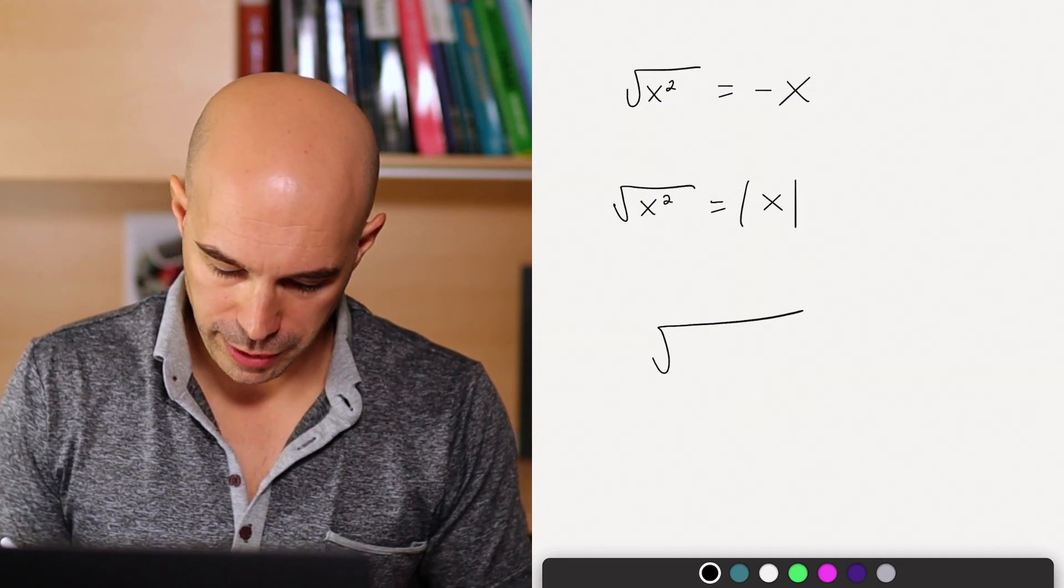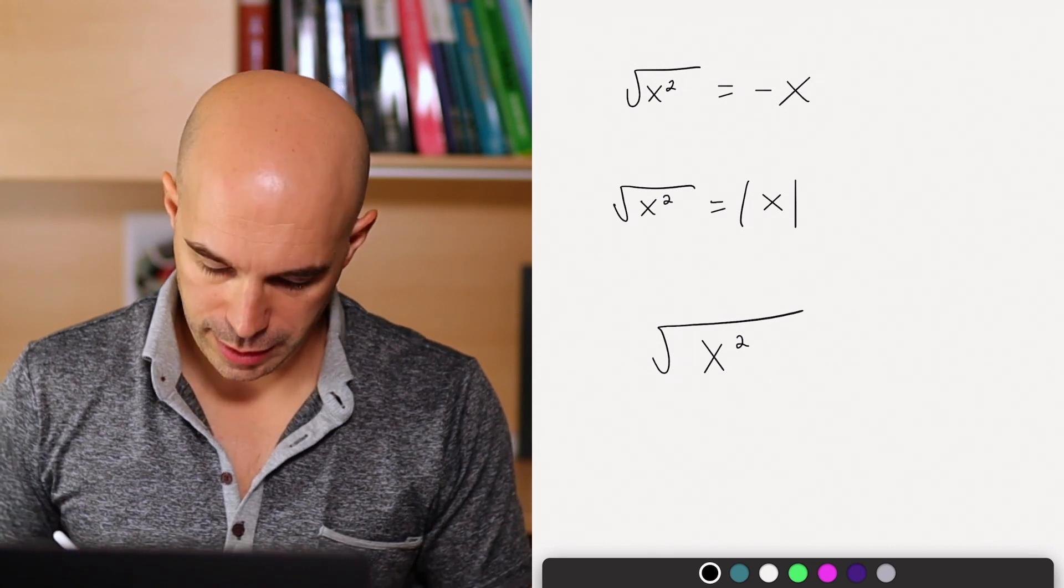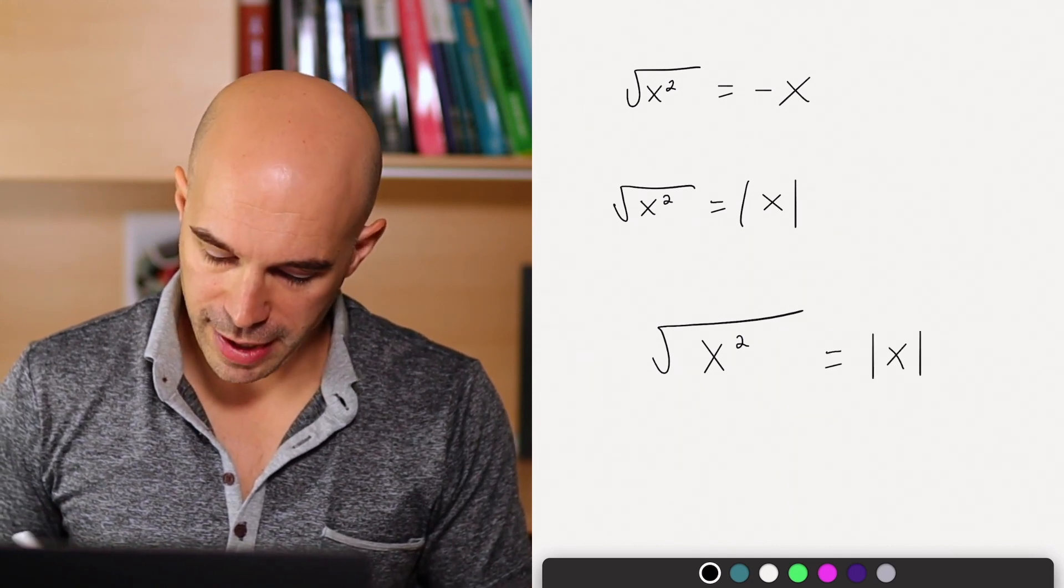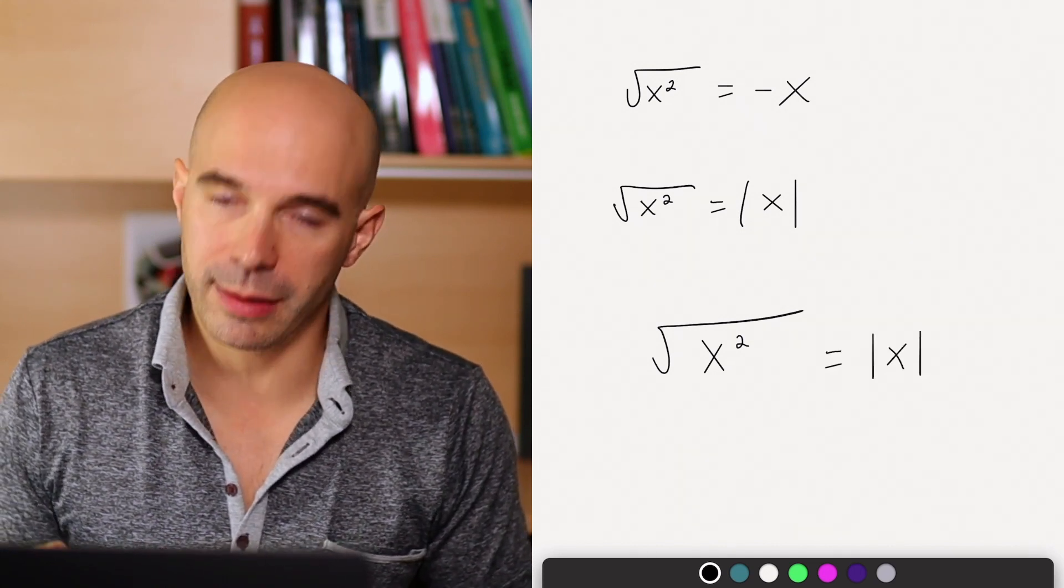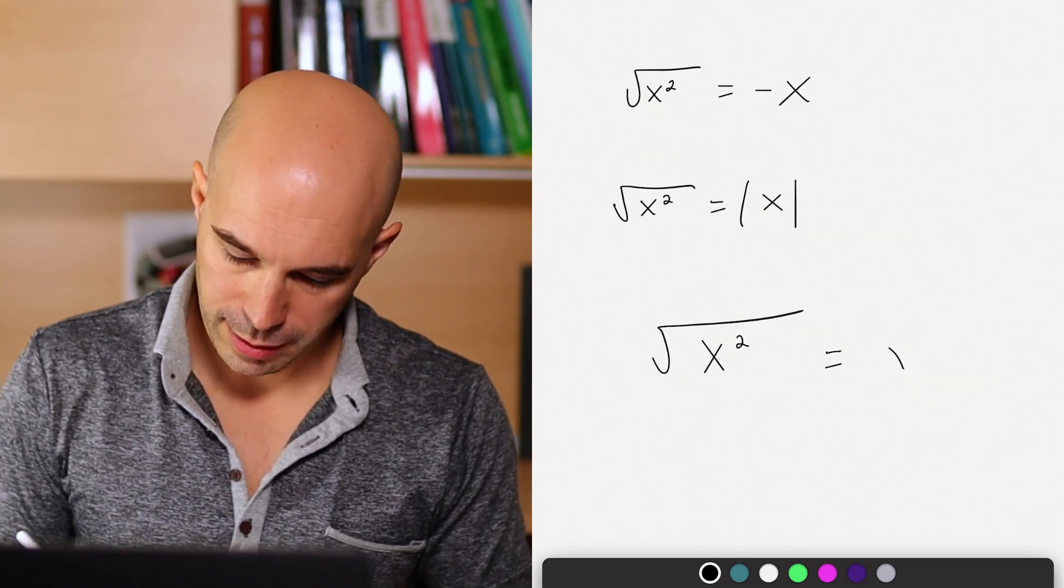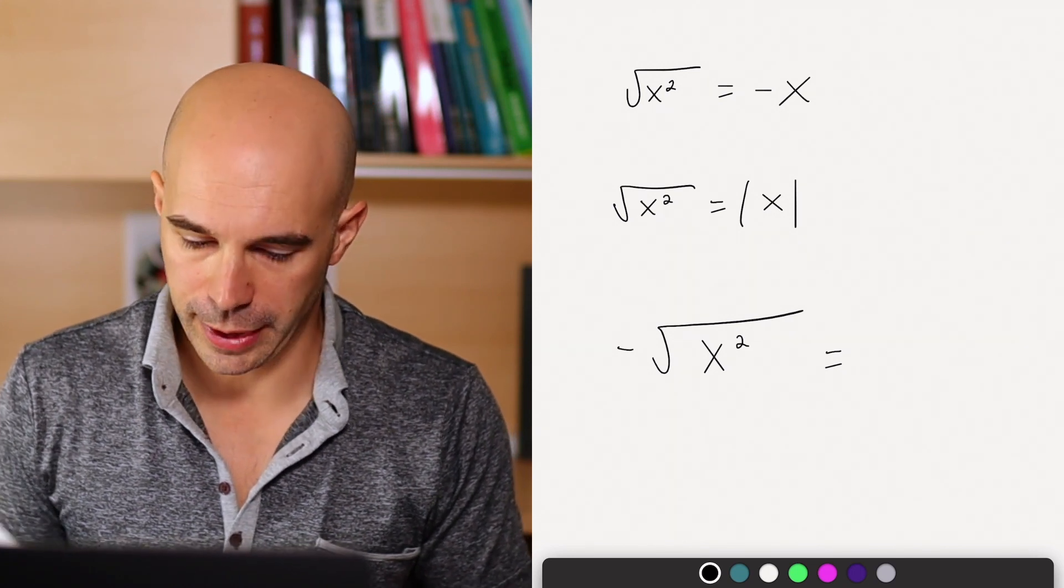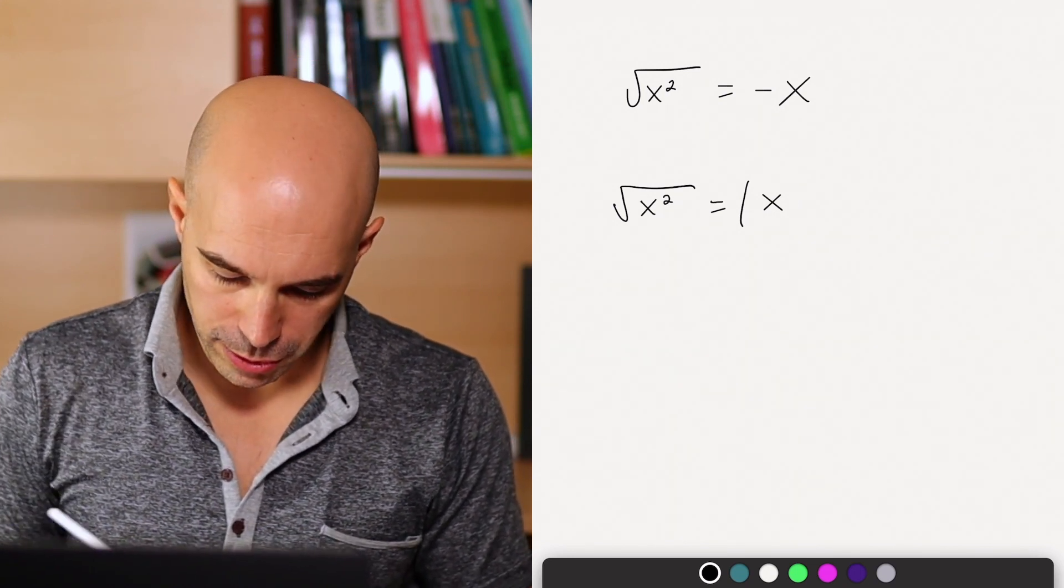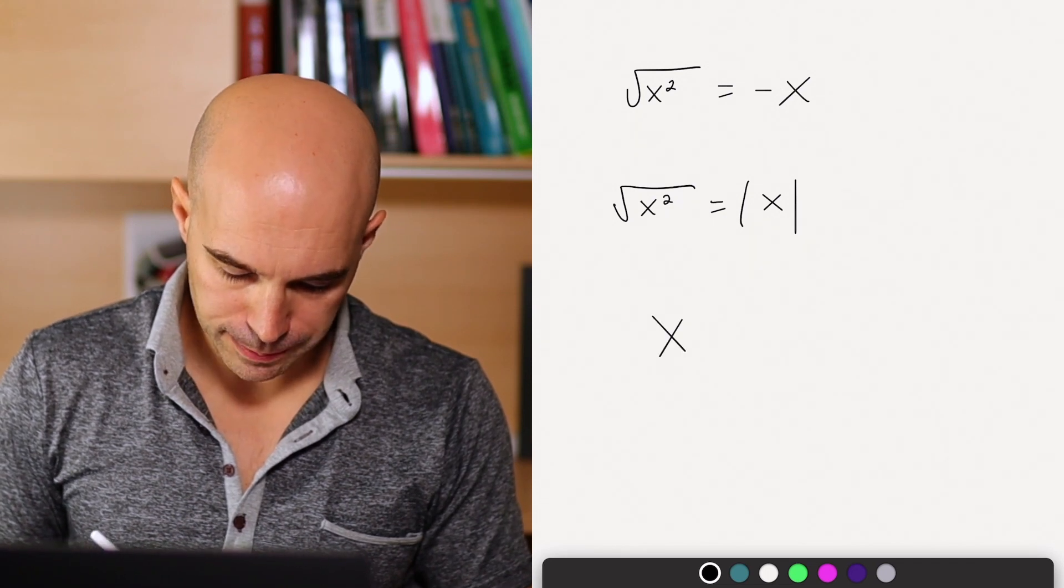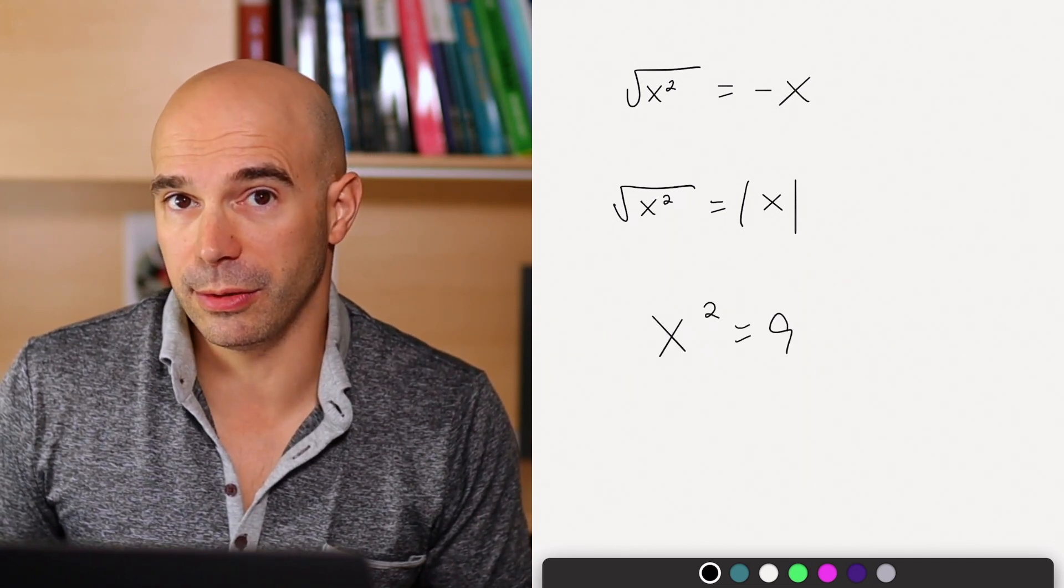If the GMAT meant negative 3, the GMAT would have said negative square root of 9. Okay, so this is always true. For that reason, the square root of x squared is the absolute value of X, because if they meant the negative option then they would have said negative square root of x squared.